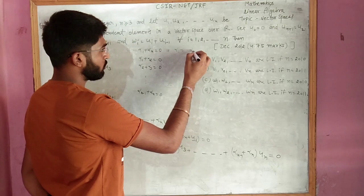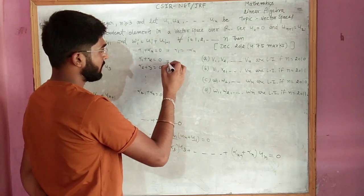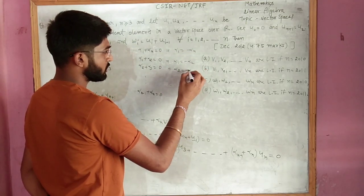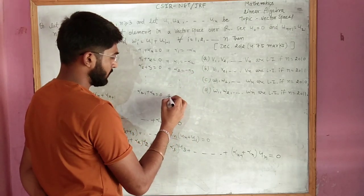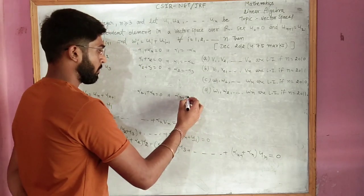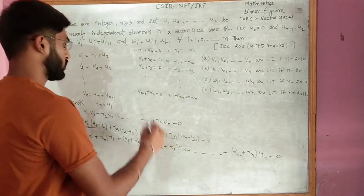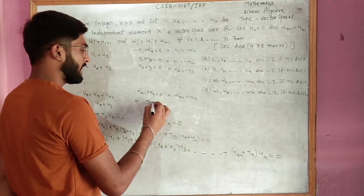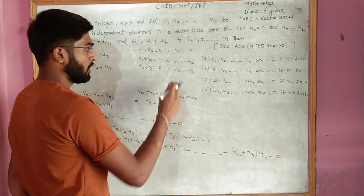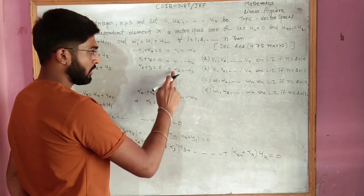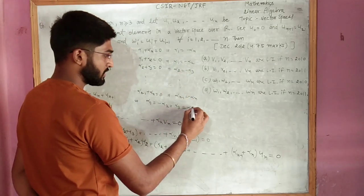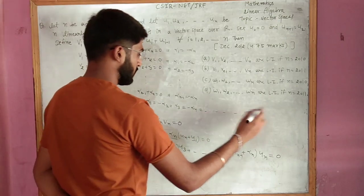From the system we get: alpha1 = -alphaN, alpha1 = -alpha2, alpha2 = -alpha3, and alpha(n-1) = -alphaN. So the chain reads alpha1 = -alpha2 = +alpha3 = -alpha4 = ... The pattern is that odd-indexed alphas have positive sign and even-indexed alphas have negative sign.